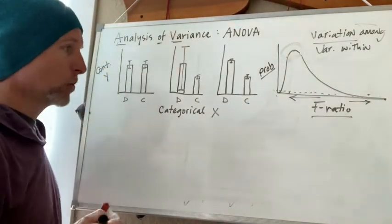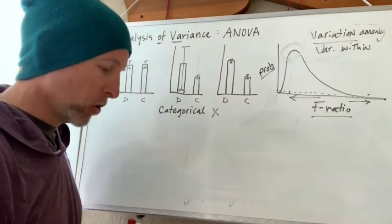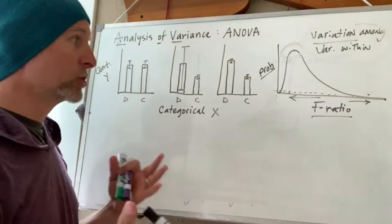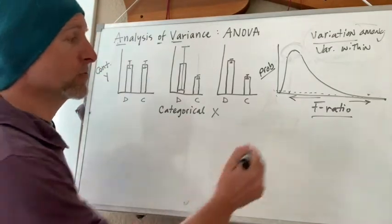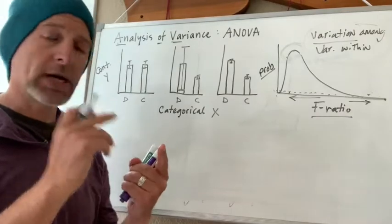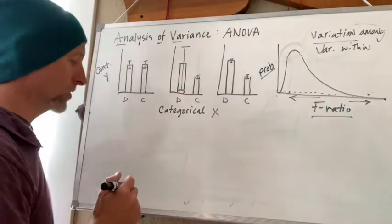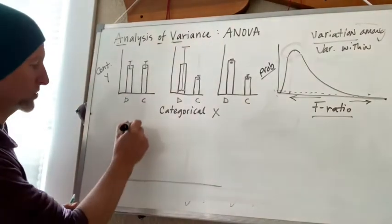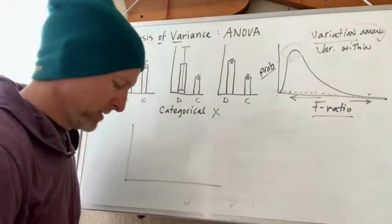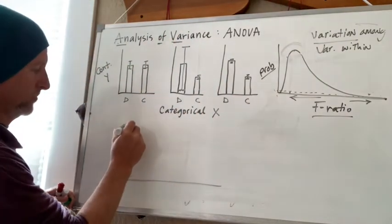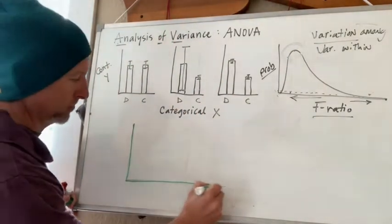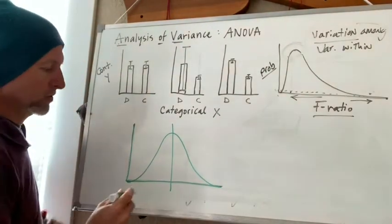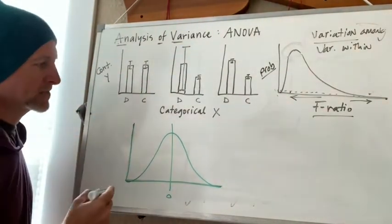This is why we don't spend a whole lot of time concentrating too much on the distributions of these various scores. Because whether we're talking about f-ratio or chi-squared or t-scores, here's a hypothetical t-score distribution.